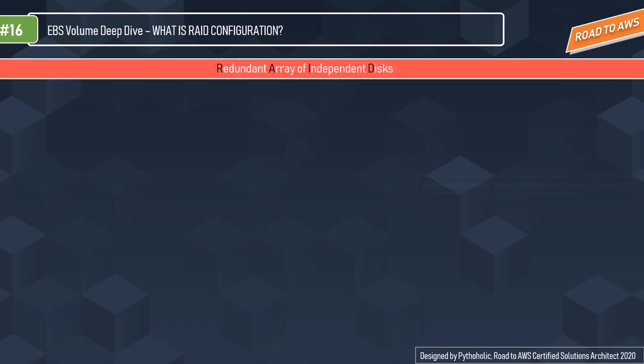With Amazon EBS, you can use any of the standard RAID configurations that you can use with a traditional bare metal server, as long as that particular RAID configuration is supported by the operating system for your instance. We'll get into the details of all of this.